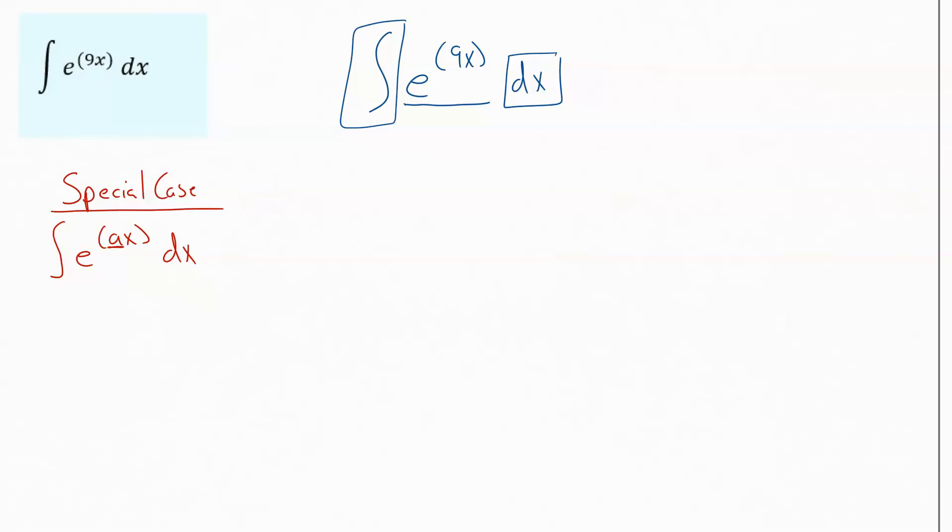So the antiderivative of this always works out to be 1 over whatever that number is, and then the e to the ax just stays the same. And then we always put when we're talking about indefinite integrals, a plus c at the end.